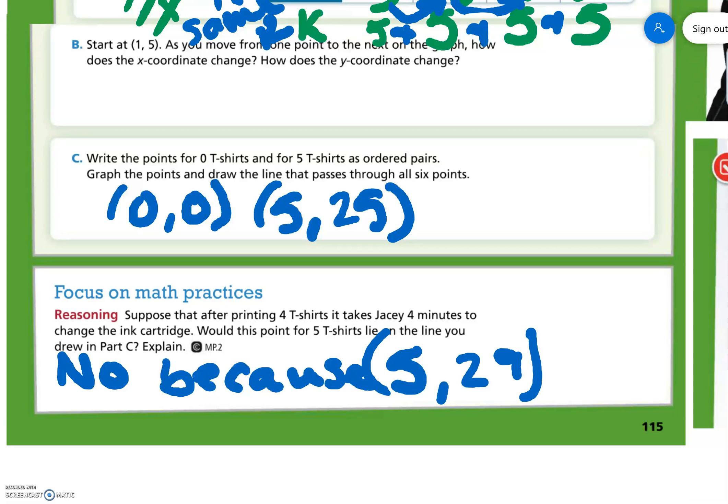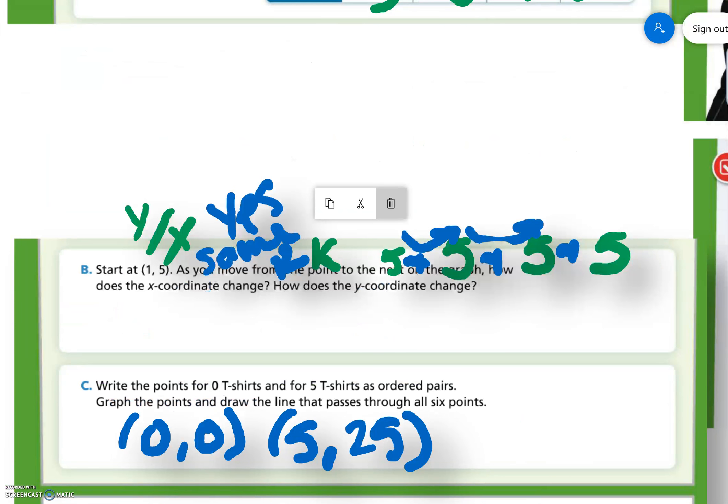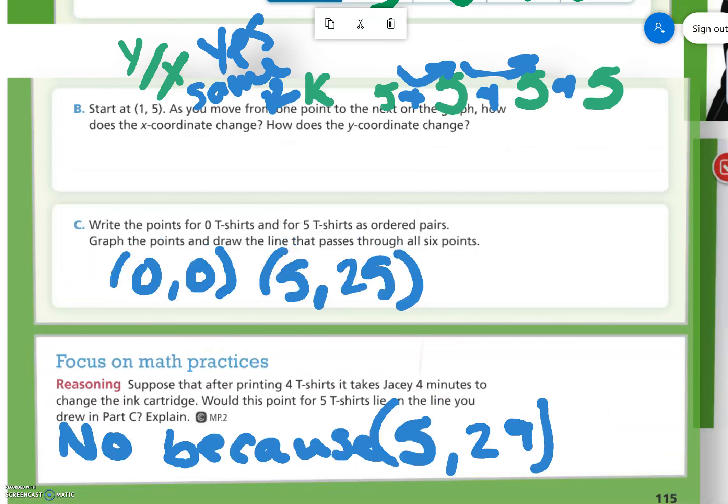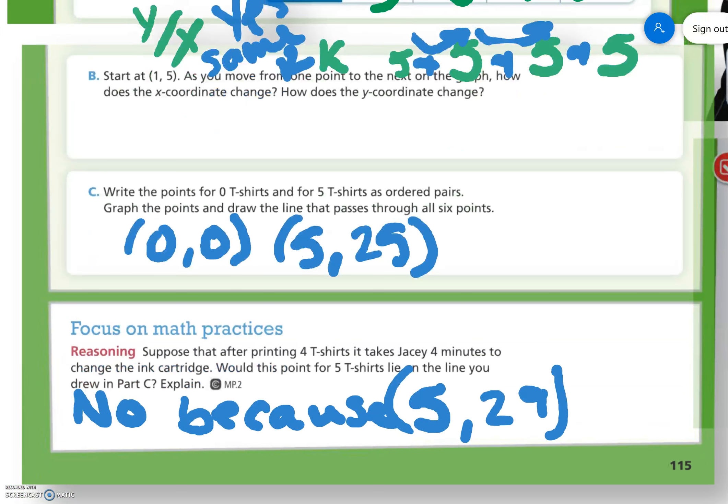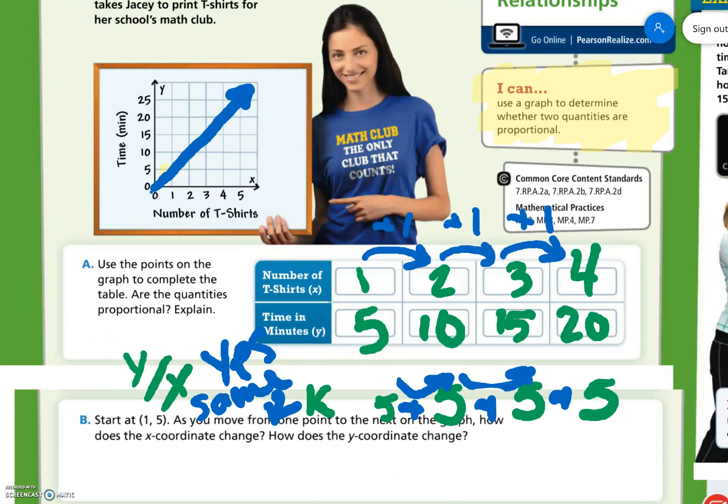So it would be (5,29), which if we wanted to graph it, (5,29) would be up here, which is not on our blue line.